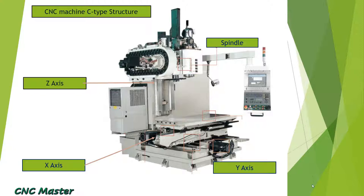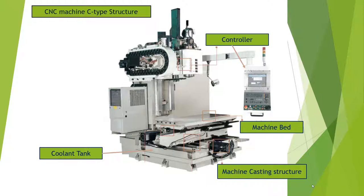This machine is a C-frame structure machine. There is an X-axis, a Y-axis, and a Z-axis. The spindle is the heart of the machine. We will discuss this topic in detail today. The controller — I will make a separate detail video on that. The coolant tank is used to store the coolant. Machine casting is an important part; if the casting is not good quality, it will affect the surface finish and machining quality of the job.